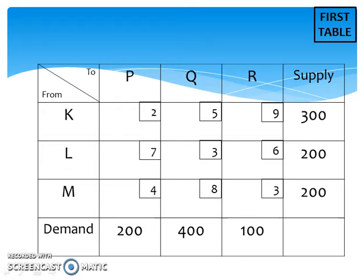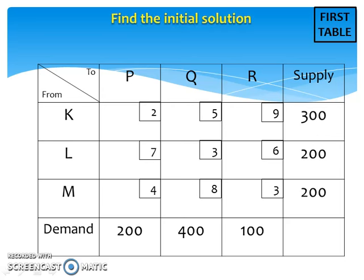Suppose that a transportation table has been set up like this. We will begin solving this problem by finding the initial solution. To find the initial solution, begin at this square, look at the corresponding supply and demand value, and choose the smallest value.